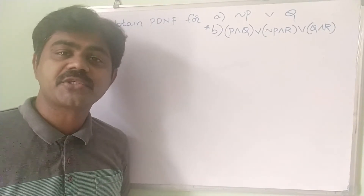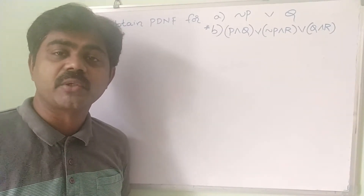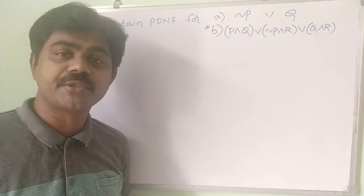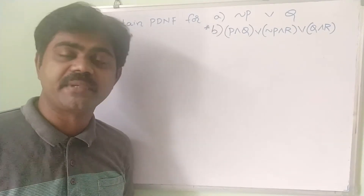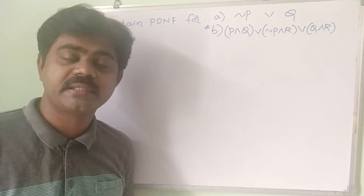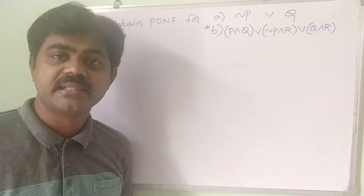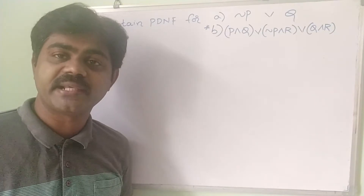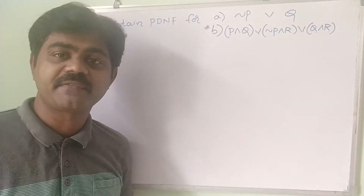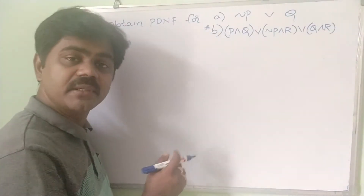Hello everyone, welcome to our channel. Today we are going to discuss PDNF without using a truth table. In the previous class we discussed PCNF and PDNF with a truth table, but here we will discuss PCNF and PDNF without using a truth table. We know that PDNF is a sum of products. Let's take the first example.